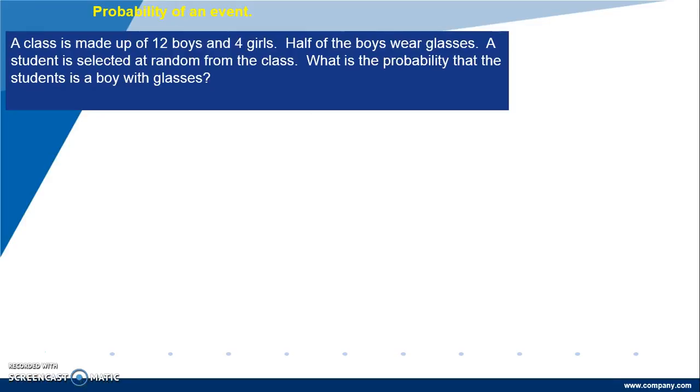The next problem is a little bit more tricky. This time we have a class which has 12 boys and 4 girls. Half of the boys wear glasses. A student is selected at random from the class. What is the probability that the student is a boy with glasses?